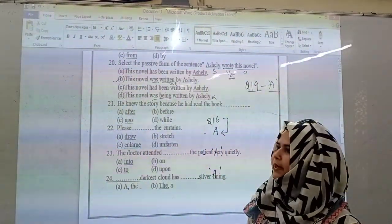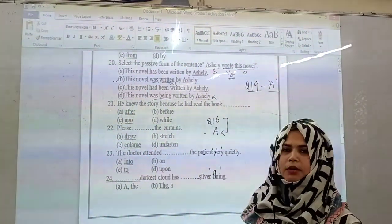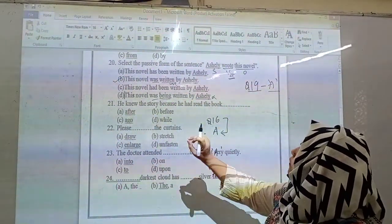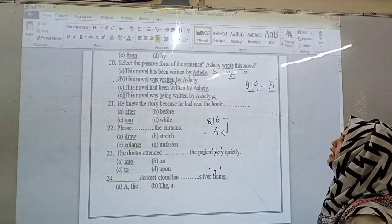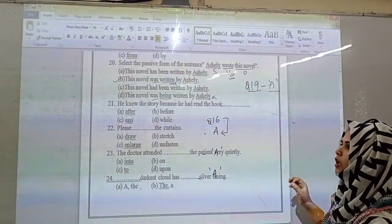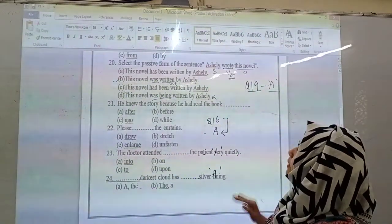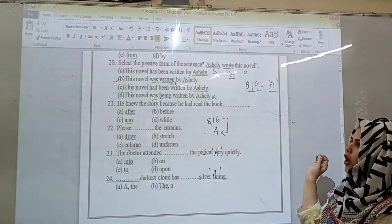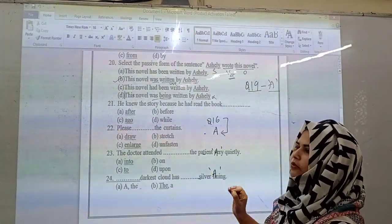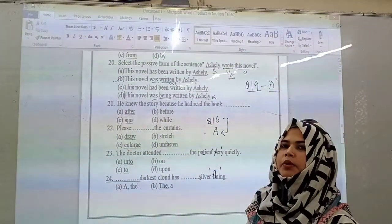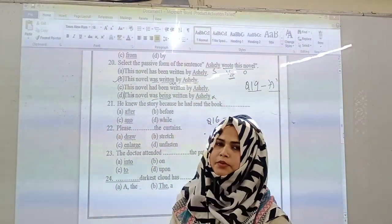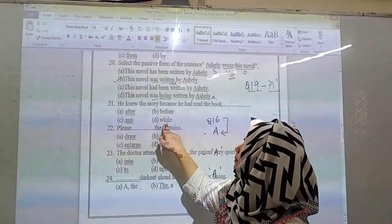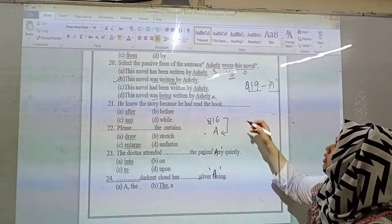Then next: he knew the story because he had read the book. We have to fill in the blank here. He knew the story because he had read the book dash. Options are after, before, ago, or while. Obviously, we know the story because we have read that story before. So here the answer will be before. He had read this book before.